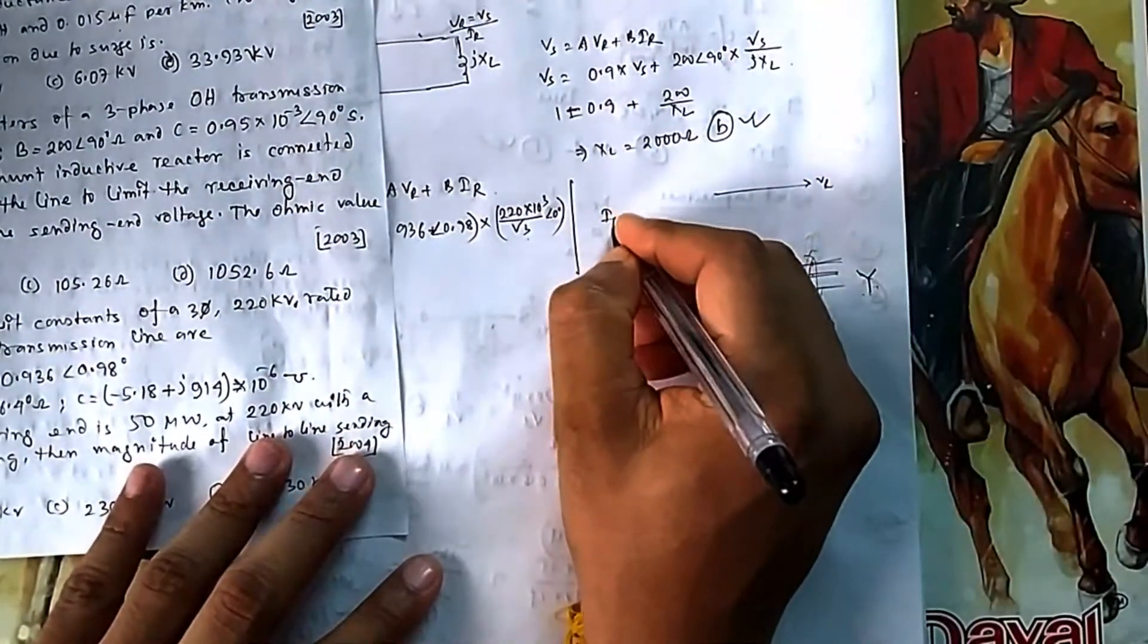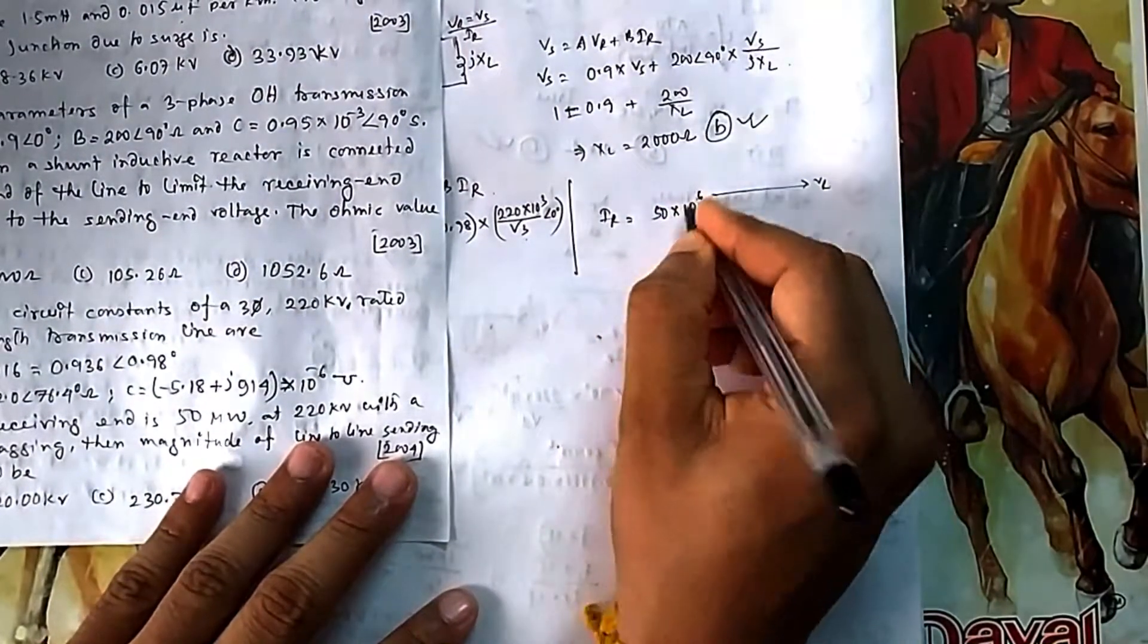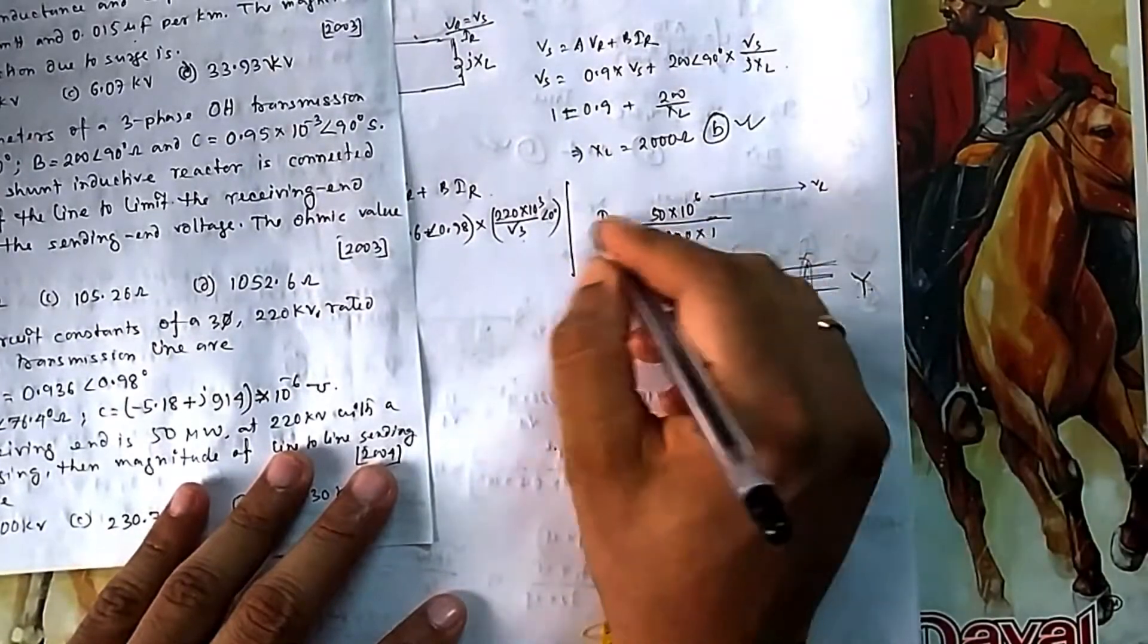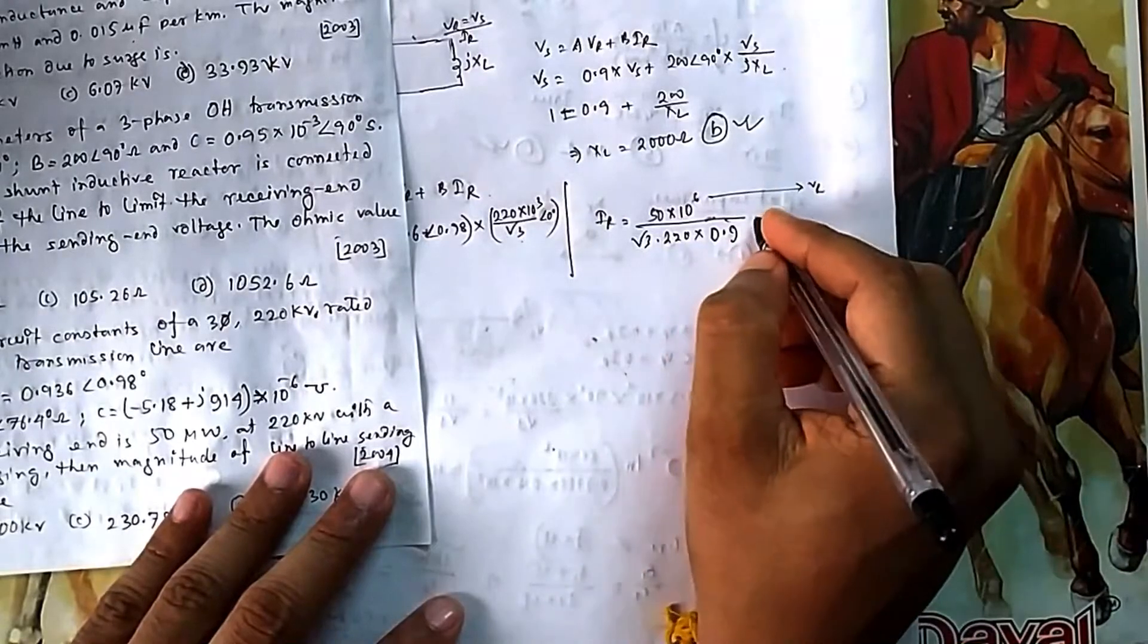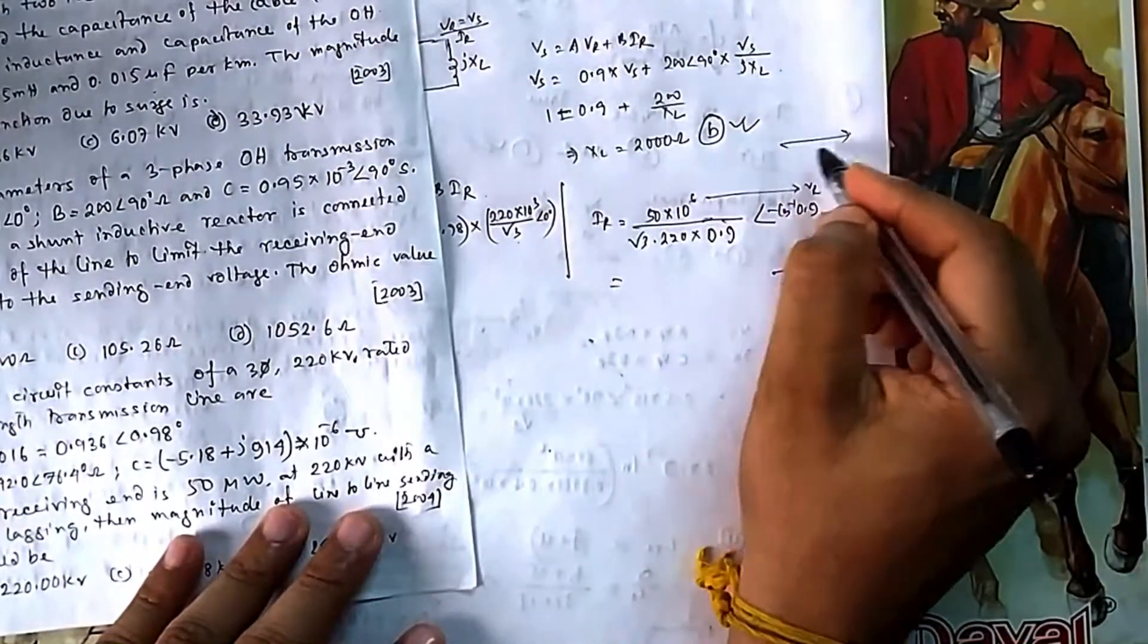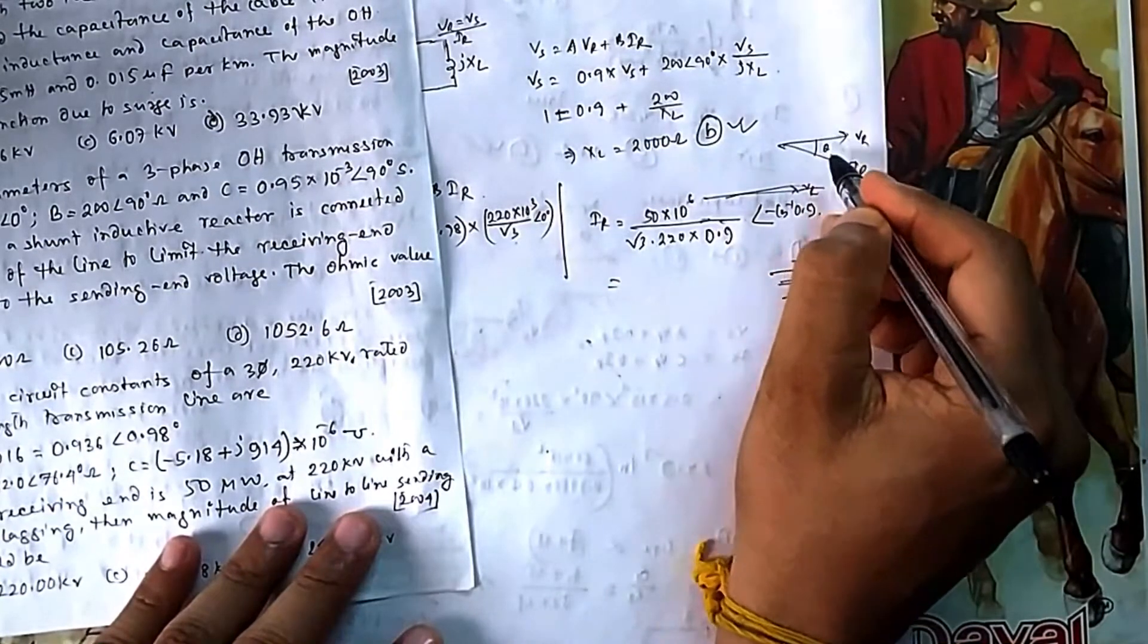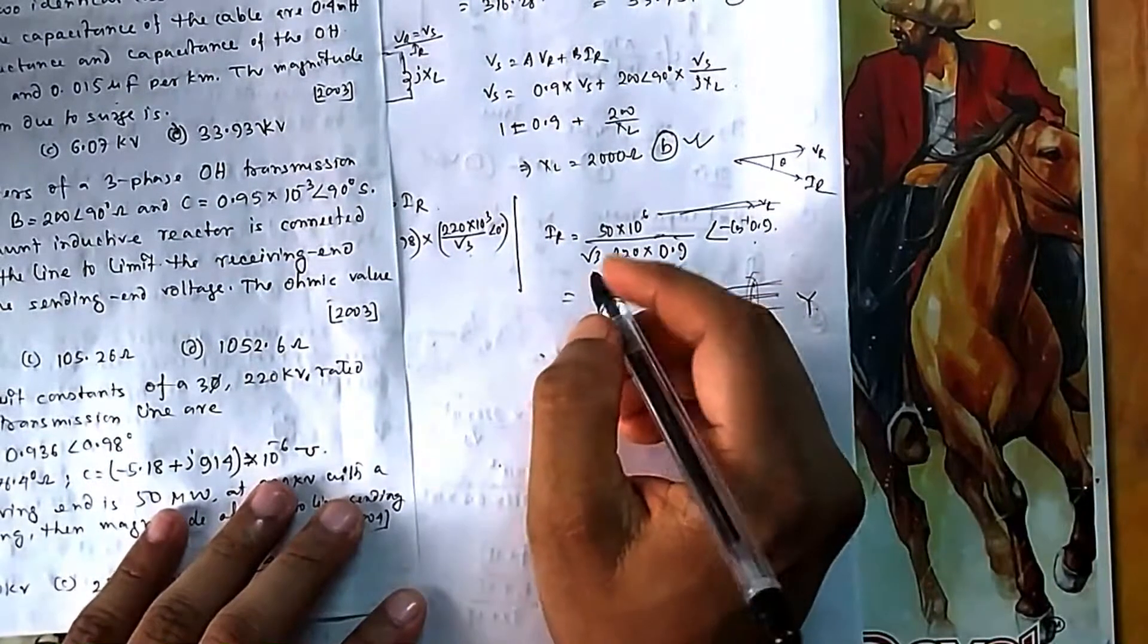What is Ir? Power = 50 × 10^6 = √3 × VL × IL. VL is 220, cos φ is 0.9, and there will be an angle because it's lagging. So minus cos inverse 0.9 because the power factor is 0.9. This is Vr, and Ir will be at this angle. If you calculate this, you will get the current value.